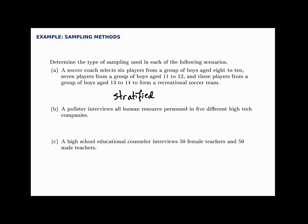Generally with stratified sampling we select the same number from each group — in this case the coach selected six from one group, seven from another, and three from another, but the concept is stratified. In the second situation, a pollster interviews all human resource personnel in five different high-tech companies. The pollster selected all personnel from a few chosen companies — selecting everyone from a couple of groups makes this cluster sampling. If they had selected a few from all groups, that would be stratified sampling; selecting full groups makes it cluster sampling.